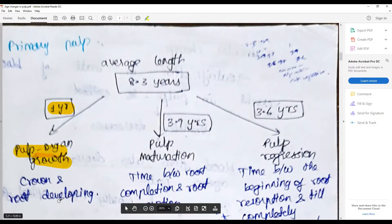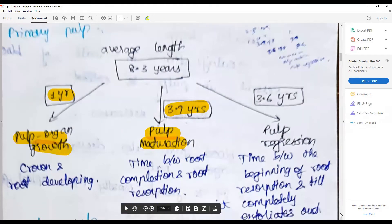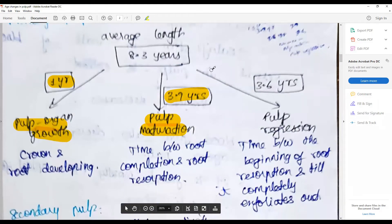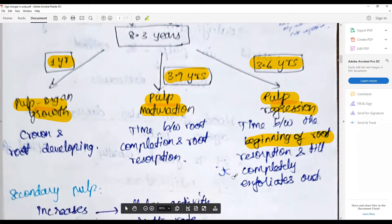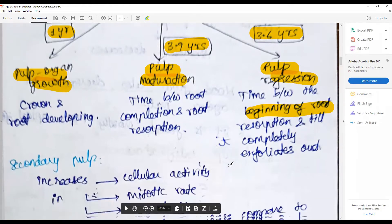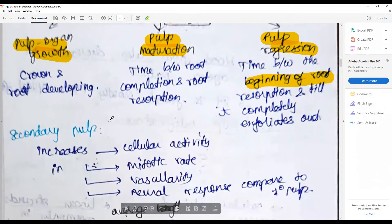Next is about 3.9 years where pulp maturation happens. This is the time between the root completion and root resorption. Next is the 3.6 years where there is pulp regression, the time beginning between the beginning of root resorption till the complete exfoliation.